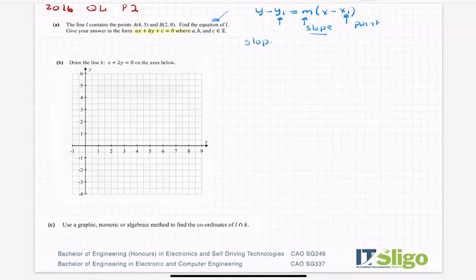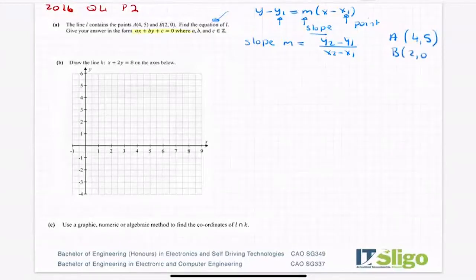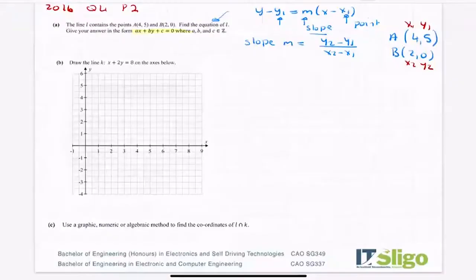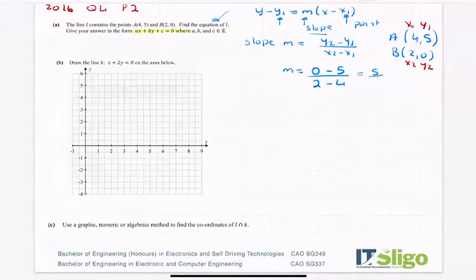Slope m equals y2 minus y1 over x2 minus x1. I'm getting the slope of the line l which contains the points a and b, so these are my x1 y1, x2 y2. Always a reminder: if you forget how to label the points, sub them in. Slope m equals y2 minus y1 over x2 minus x1 — hit your fraction button on your calculator: 0 minus 5 over 2 minus 4, and I got 5 over 2 for my slope.